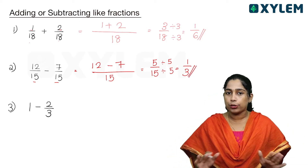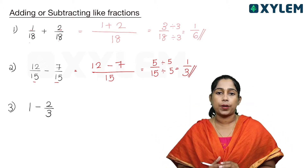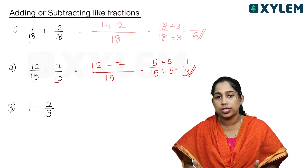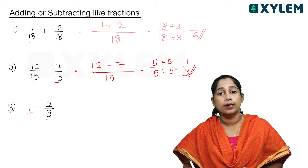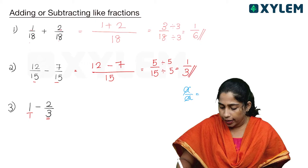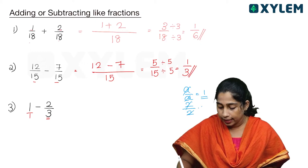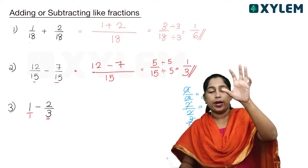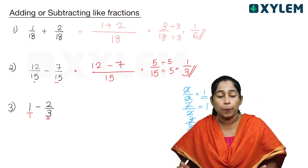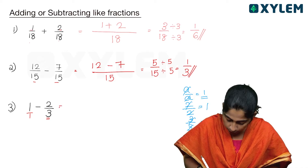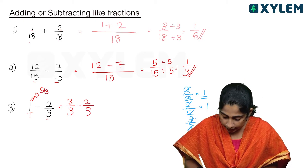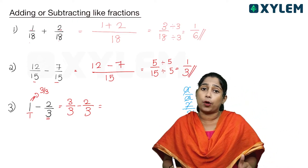So easy, isn't it? In this case, the denominator is the same. We have to write the numerator and subtract, then write the denominator. 1 minus 2 by 3 — that is the like fraction. Here the denominator is 3. Any number divided by itself gives you 1 as the answer. 2 by 2 is 1, 3 by 3 is 1 — a number divided by the same number gives you 1.